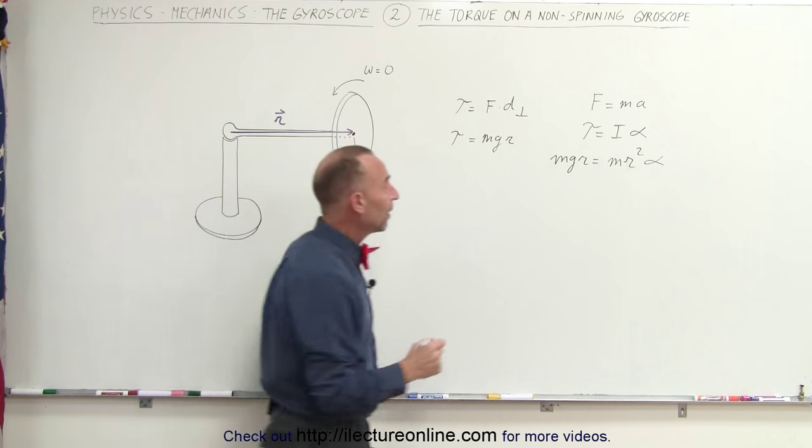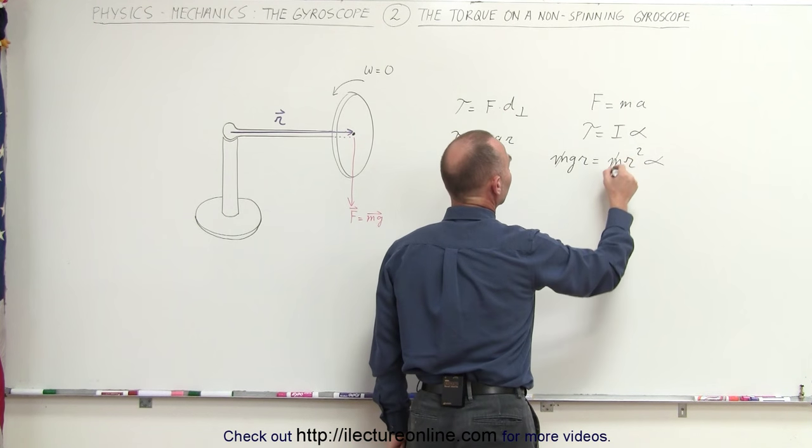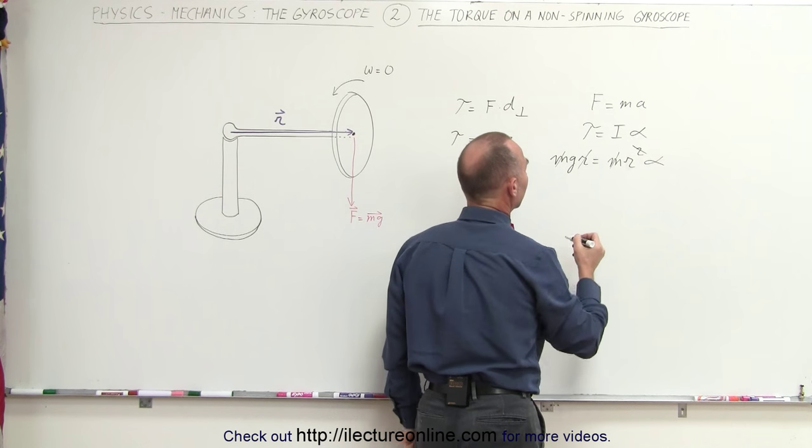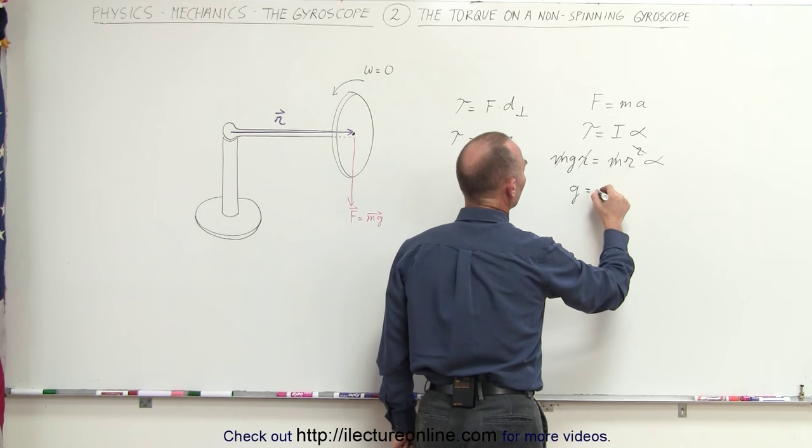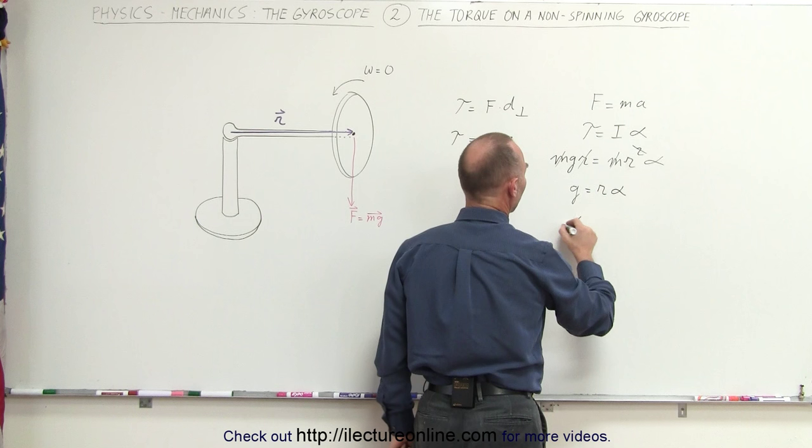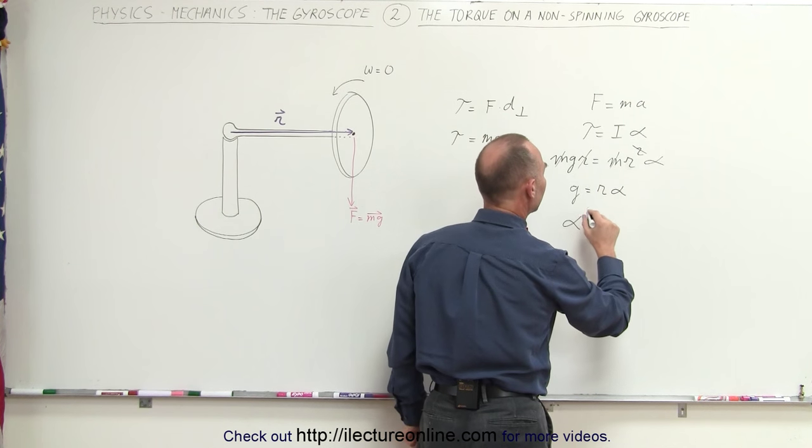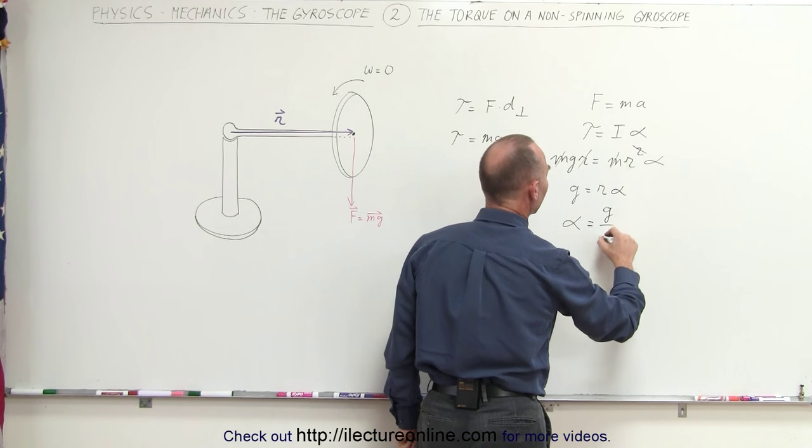Now notice that we can simplify this by canceling out a mass and one of the radii. That means that g is equal to r times alpha, or alpha, the angular acceleration, is equal to g divided by r.